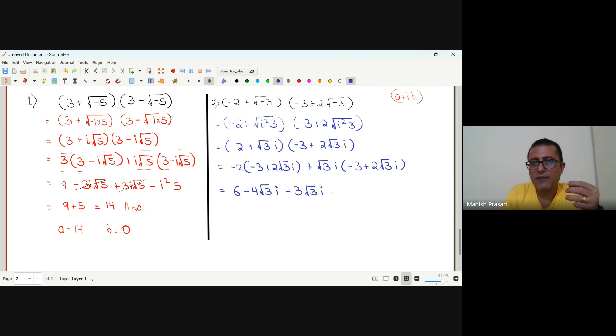Hum ye wala mistake kya karte hai bachpan se. And ye ho ga negative 1. So this is 6 minus 4 minus 3 minus 7 root 3 i.